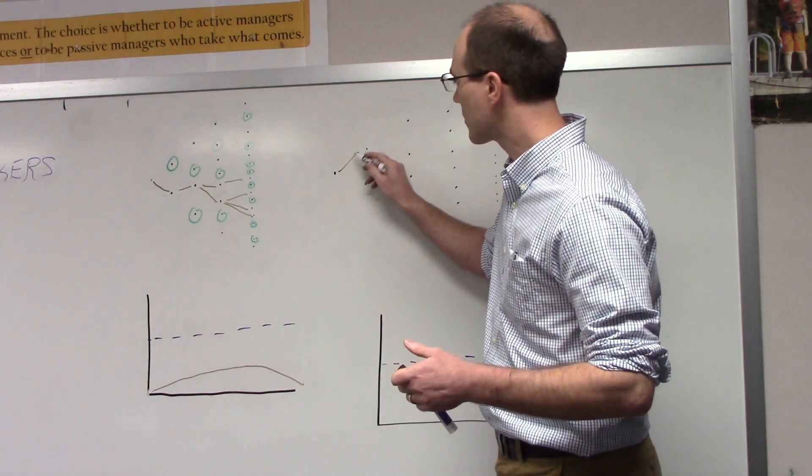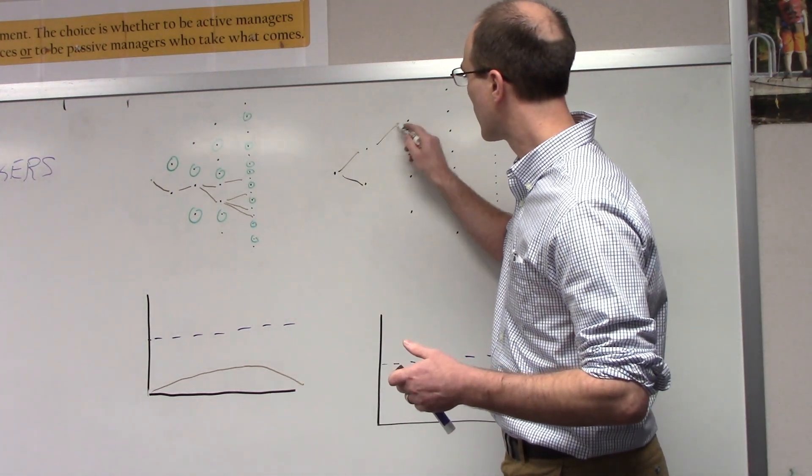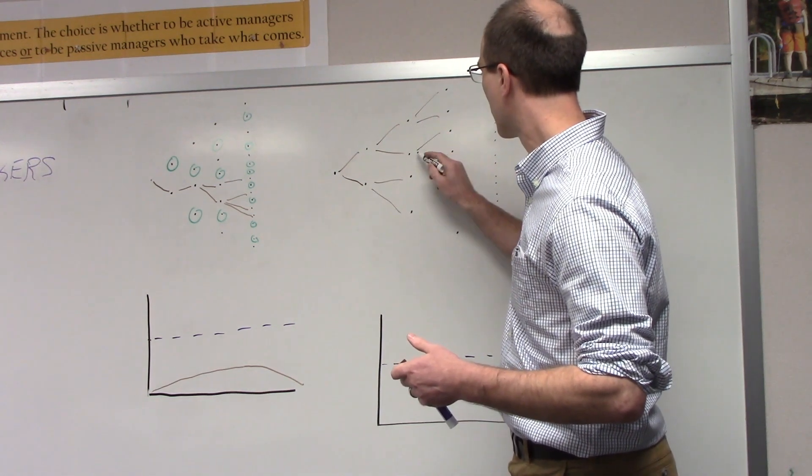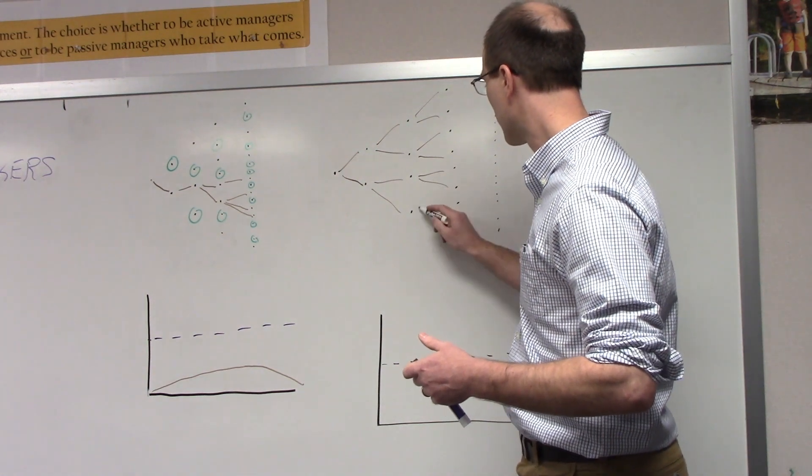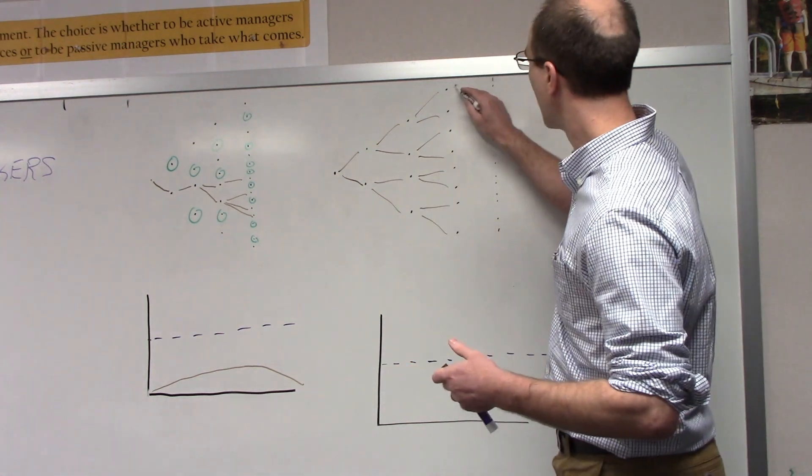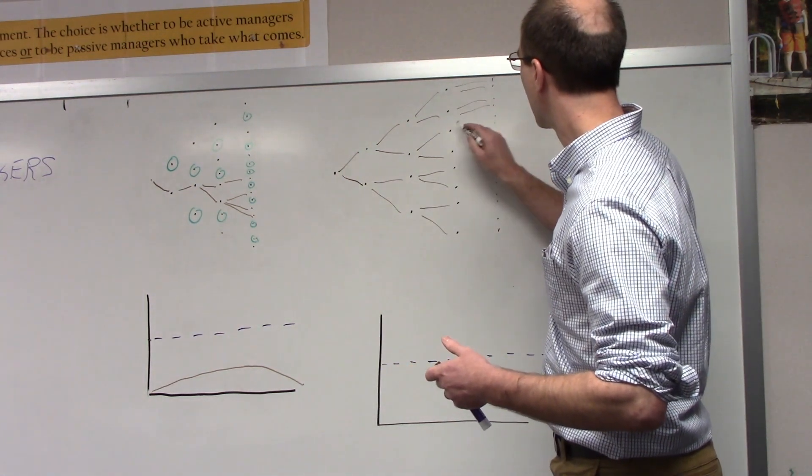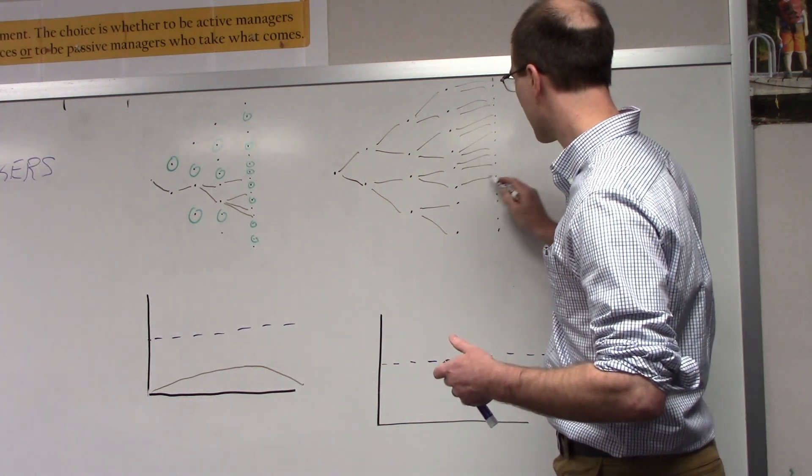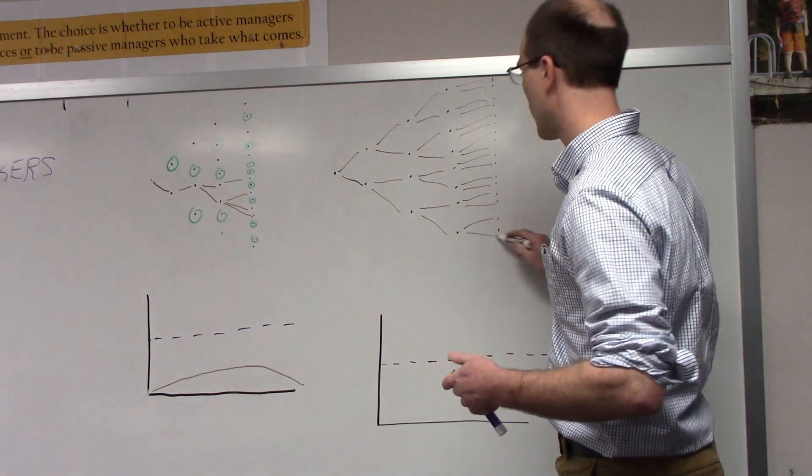So one person spreads it to two, two to four, and so on. And you can see that the system gets hit pretty hard, pretty quick.